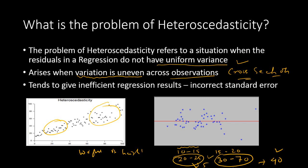These are typical cases where heteroscedasticity happens, and it is primarily a case of cross-section data. Why do we worry about it? It tends to give inefficient regression results. You will get incorrect standard errors — either underestimated or overestimated. Both are bad. You cannot interpret your results if you have incorrect standard errors.